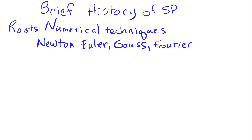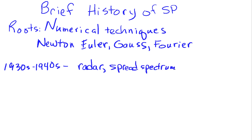There are a number of people that developed numerical techniques for solving equations that they were interested in studying in their era. More recently, in the 1930s and the 1940s, was the advent of radar, spread spectrum, communications, and the big driver here was World War II. There was a lot of interest in being able to detect airplanes and communicate in a secure manner.